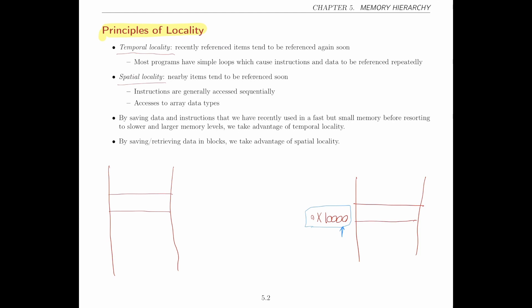What spatial locality is saying is that if you access this particular address at any point in time, it's very likely that the addresses around it, the places in the memory that are close to it, consecutive to it—maybe for example this location or these other locations that are around it—are also likely to be accessed soon.